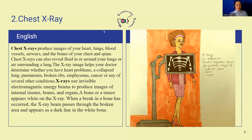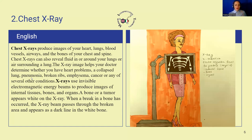A chest x-ray is a procedure that shows images of the heart, lungs, blood vessels, airways, and bones of your chest and spine. The chest x-ray can also reveal fluid in or around the lungs, or air surrounding the lungs. The x-ray helps the doctor determine if you have a heart problem, collapsed lung, pneumonia, broken ribs, emphysema, cancer, or any of several other conditions.